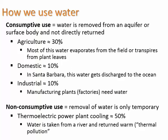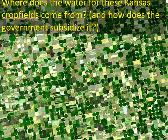We use water 30% for agriculture, 10% for domestic use meaning household, and 10% for industrial use like in factories. The other 50% is considered non-consumptive use because you're removing the water only temporarily — this is for thermoelectric power plant cooling. Agriculture is the biggest overall consumptive use of water, where you're discharging it in a less usable or non-usable form.